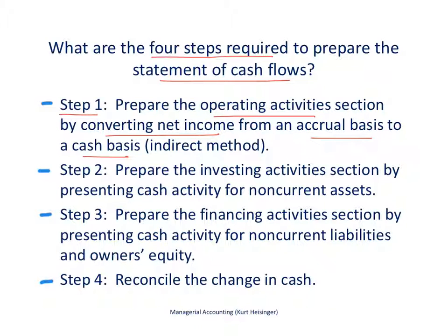Generally accepted accounting principles require that we prepare the income statement on an accrual basis, which means that we record revenues when they're earned, regardless of whether cash changes hands, and we record expenses when they are incurred, regardless of when cash changes hands. The cash basis means that we record revenue when we get the cash and expenses when we pay the cash. So the operating activity section converts net income from an accrual basis to a cash basis.